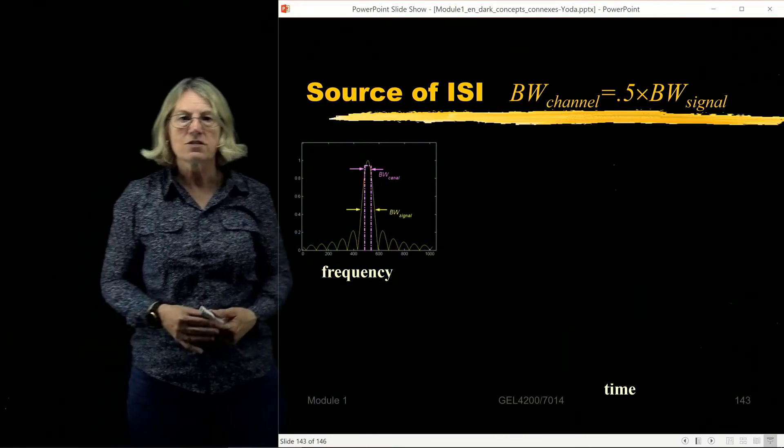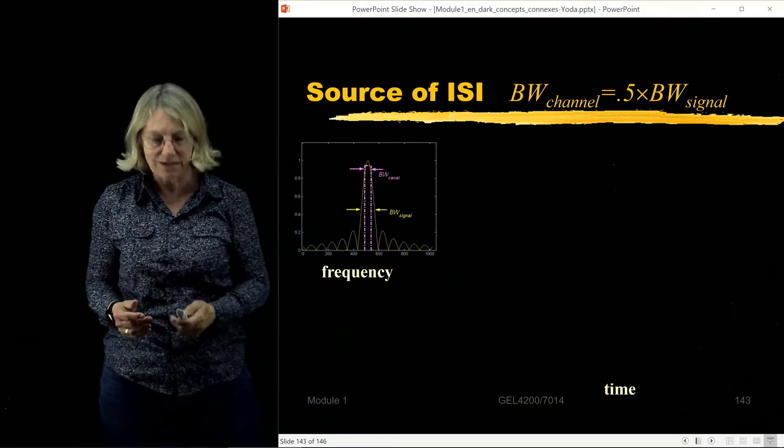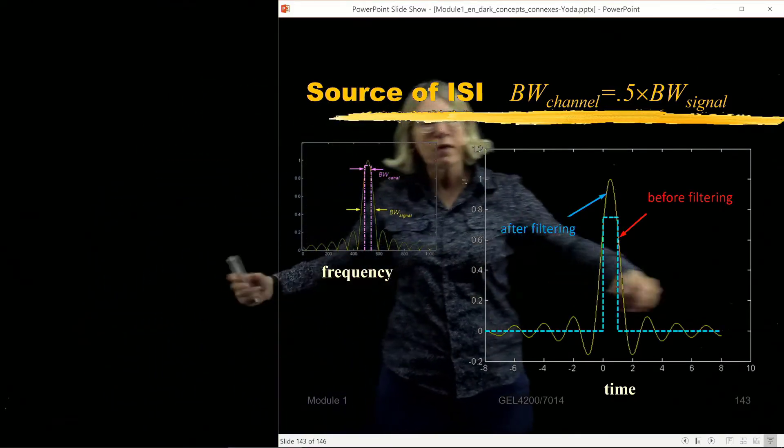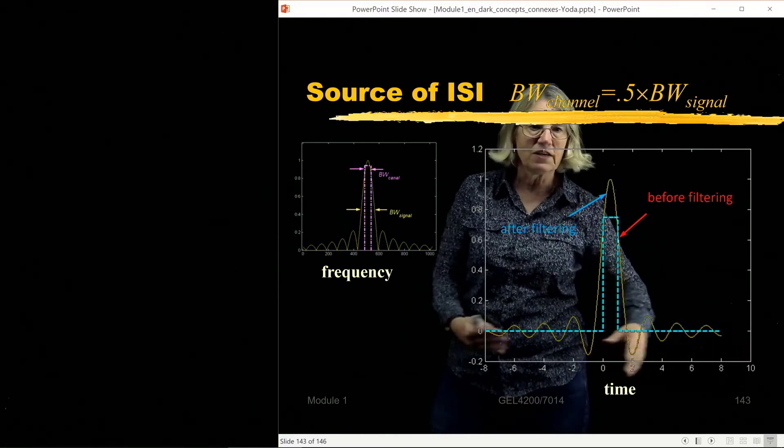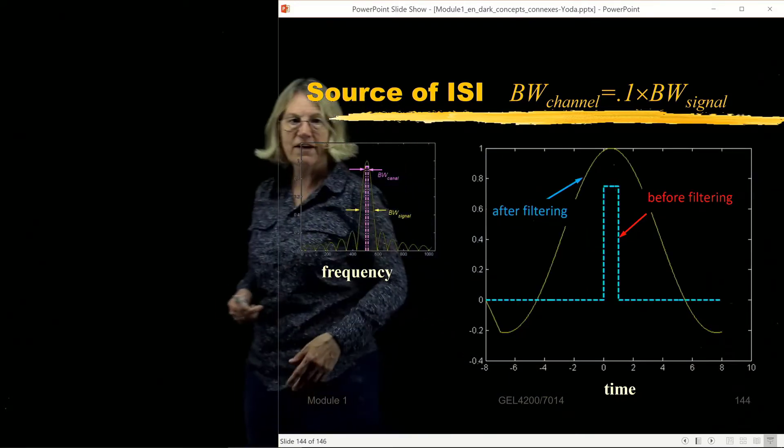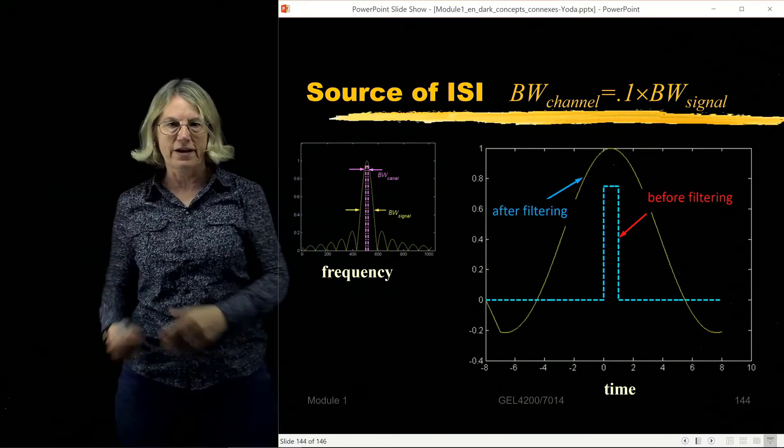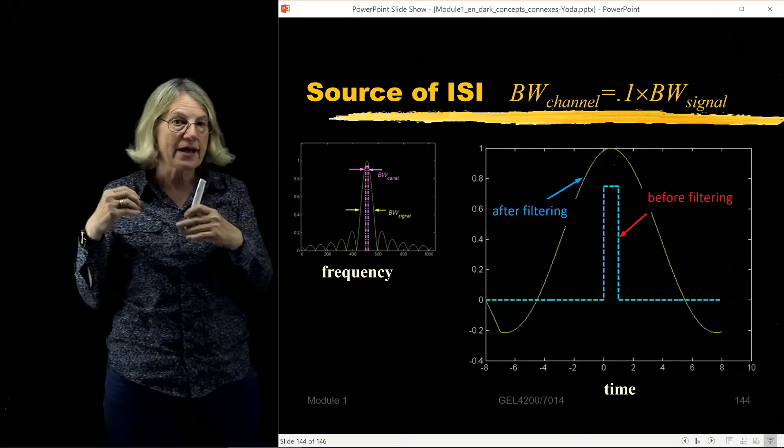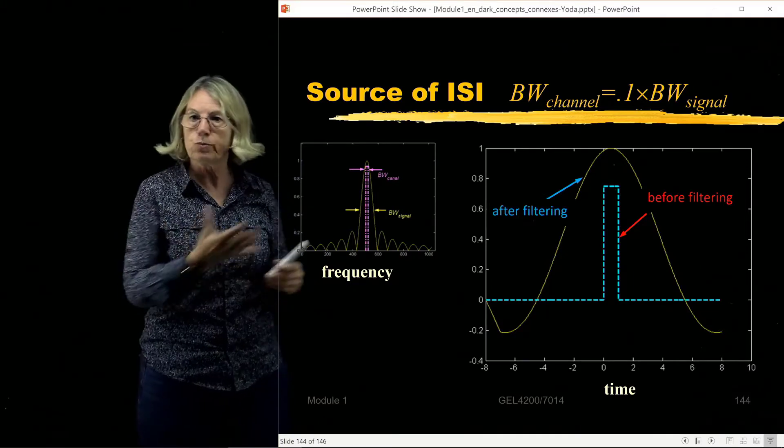Of course, we can look at the extremes. Suppose now that my bandwidth of my channel is only one half of the bandwidth of my signal. Things just get worse. That spreading of the impulse gets much wider, so there's much more significant energy outside of the original pulse. If I go to one-tenth of the bandwidth, then there's tremendous spreading.